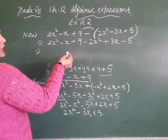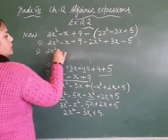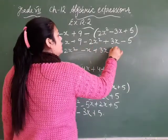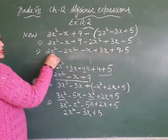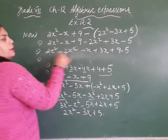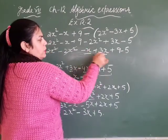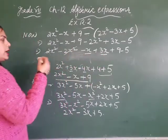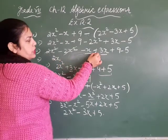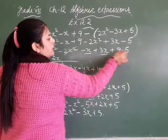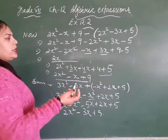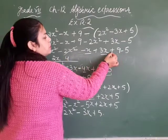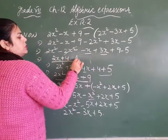Now collect like terms: 2x² minus 2x² = 0, cut ho gaye. Then minus x plus 3x: one negative, one positive — subtraction: 3 minus 1 = 2, greater term positive, so plus 2x. Then 9 minus 5: one positive, one negative — subtraction: 9 minus 5 = 4, greater term positive, so plus 4. This is our final answer: 2x + 4.